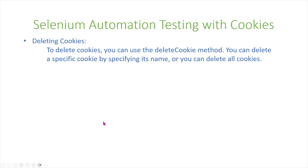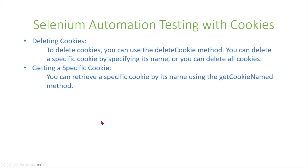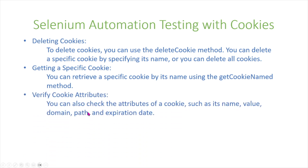You can also delete cookies using the deleteCookie method. You can delete a specific cookie by specifying its name, or you can delete all cookies. You can also retrieve a specific cookie by its name using the getCookieNamed method. Additionally, you can verify cookie attributes such as its name, value, domain, path, and expiration date.